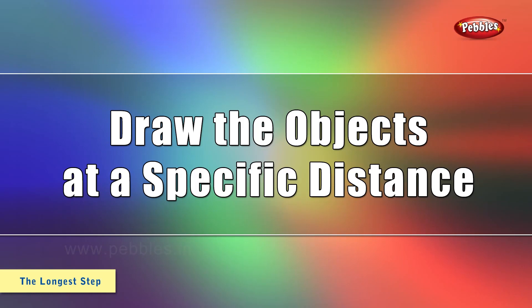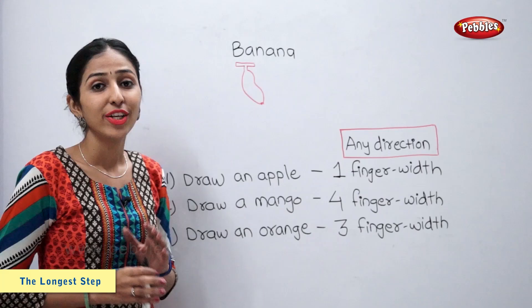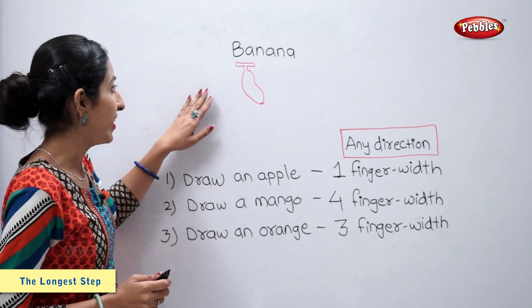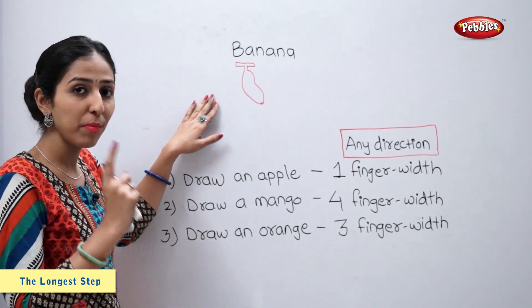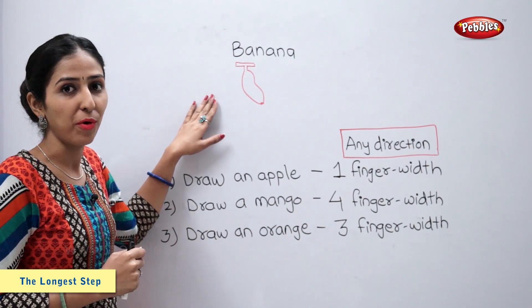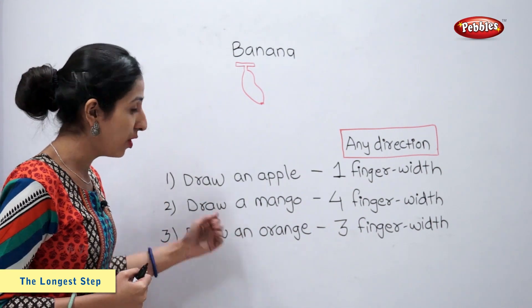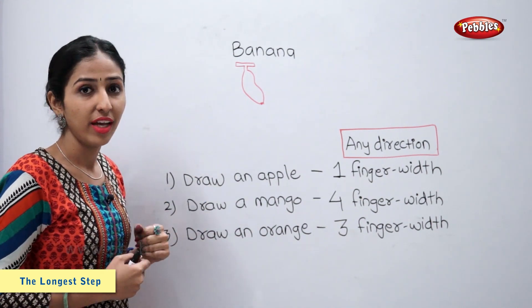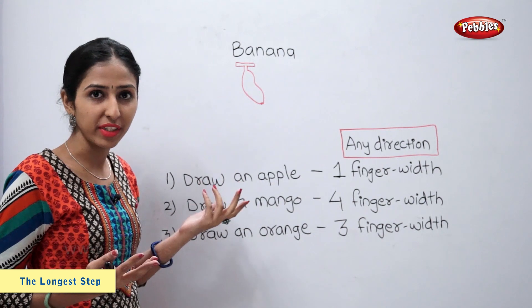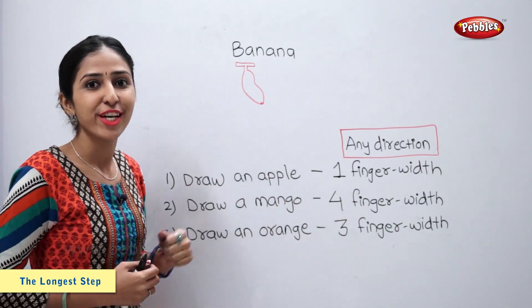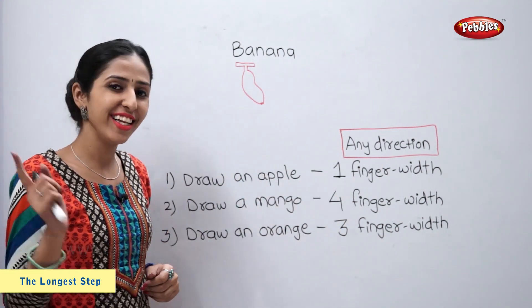Draw the objects at a specific distance. Students, as you can see there is a banana on the board. We have to draw the following fruits in any direction using the given measurement. So, let's draw.